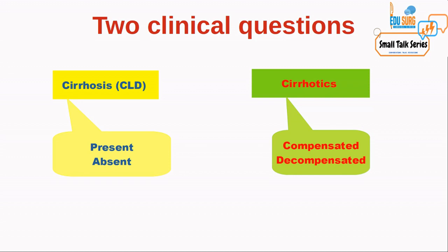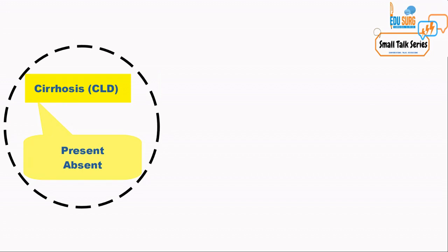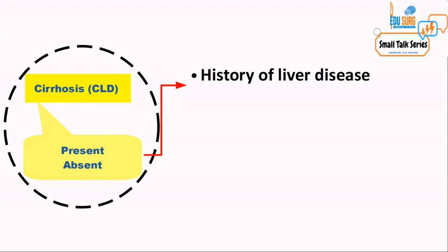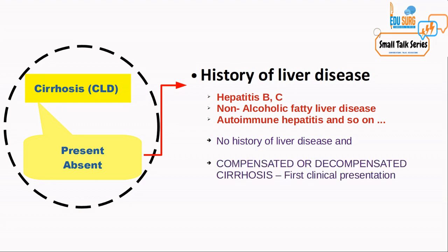Let us first see how we can identify if the patient has chronic liver disease. We go back to basic clinical medicine — we can identify cirrhosis based on the history. Some patients may present with a history of liver disease such as hepatitis B and C, non-alcoholic fatty liver disease, which is very common these days, or autoimmune hepatitis. However, you may also see patients who have no prior history of liver disease and present with compensated or decompensated cirrhosis as their first clinical presentation.